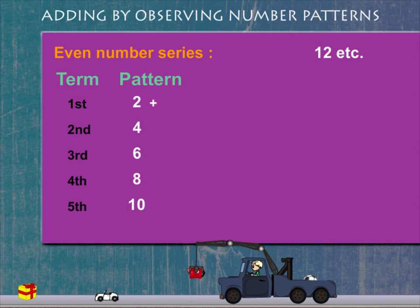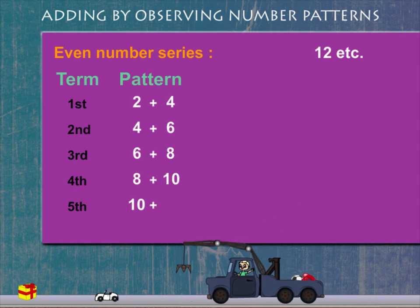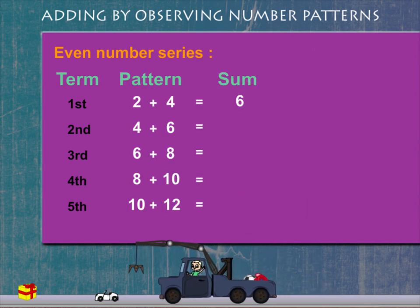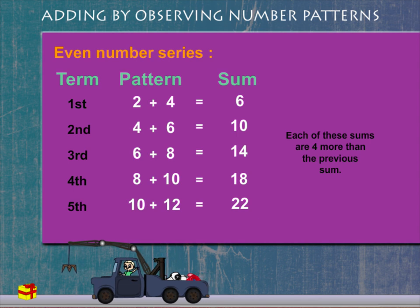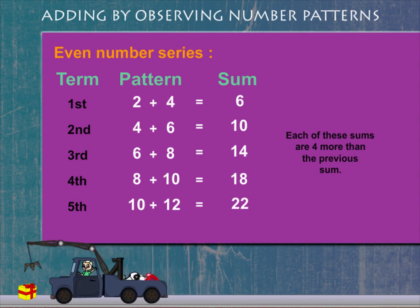If we add two consecutive terms in order we get 6, 10, 14, 18, 22, etc. Each of these sums are 4 more than the previous sum. This is quite interesting.